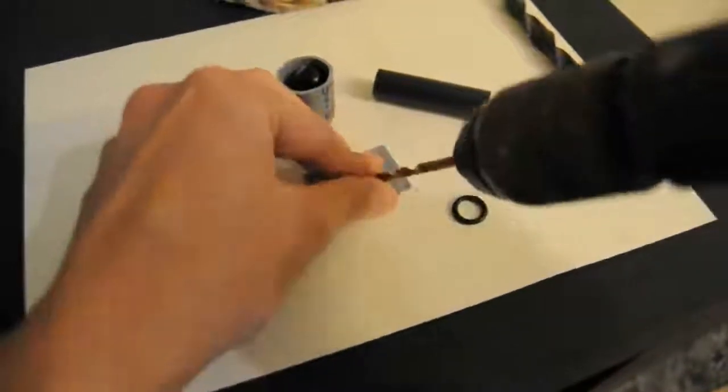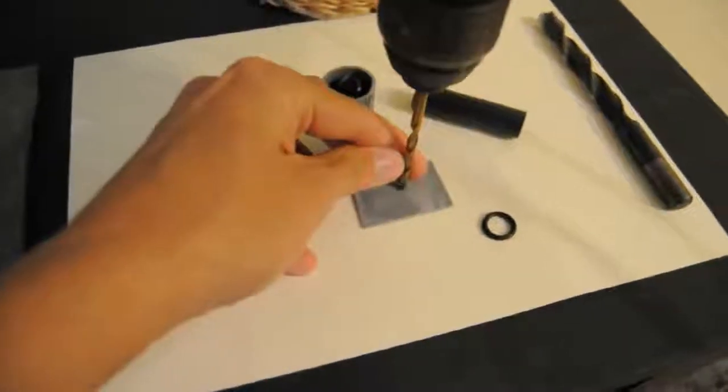Next thing to do on the list is to drill a hole on the plate a little smaller than the o-ring.